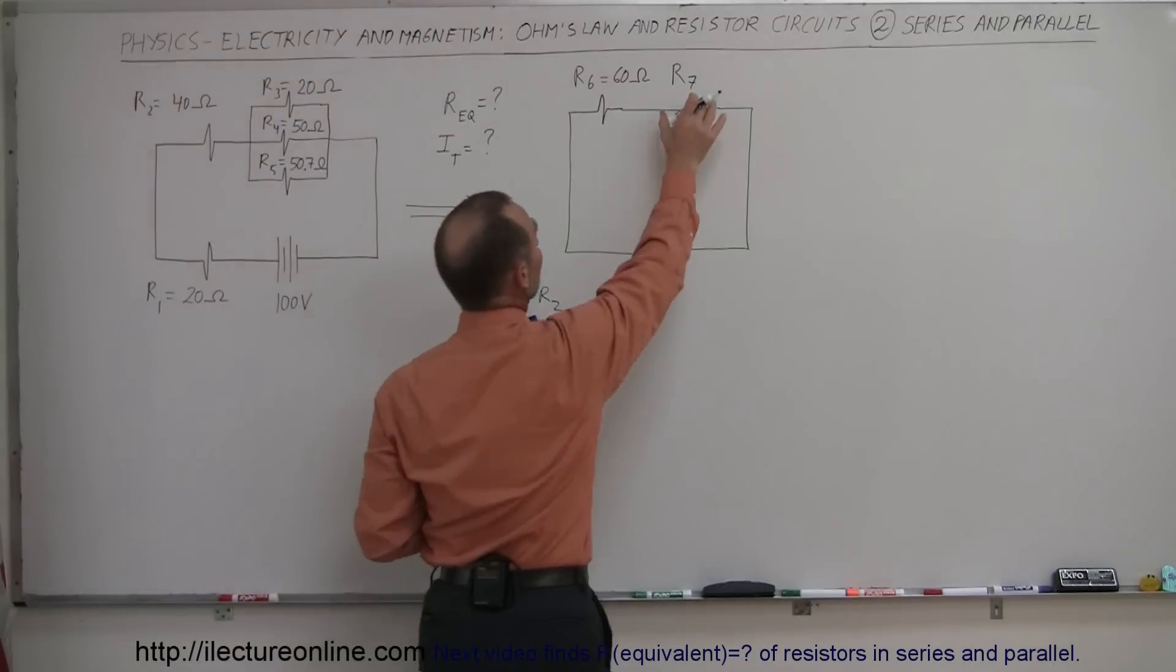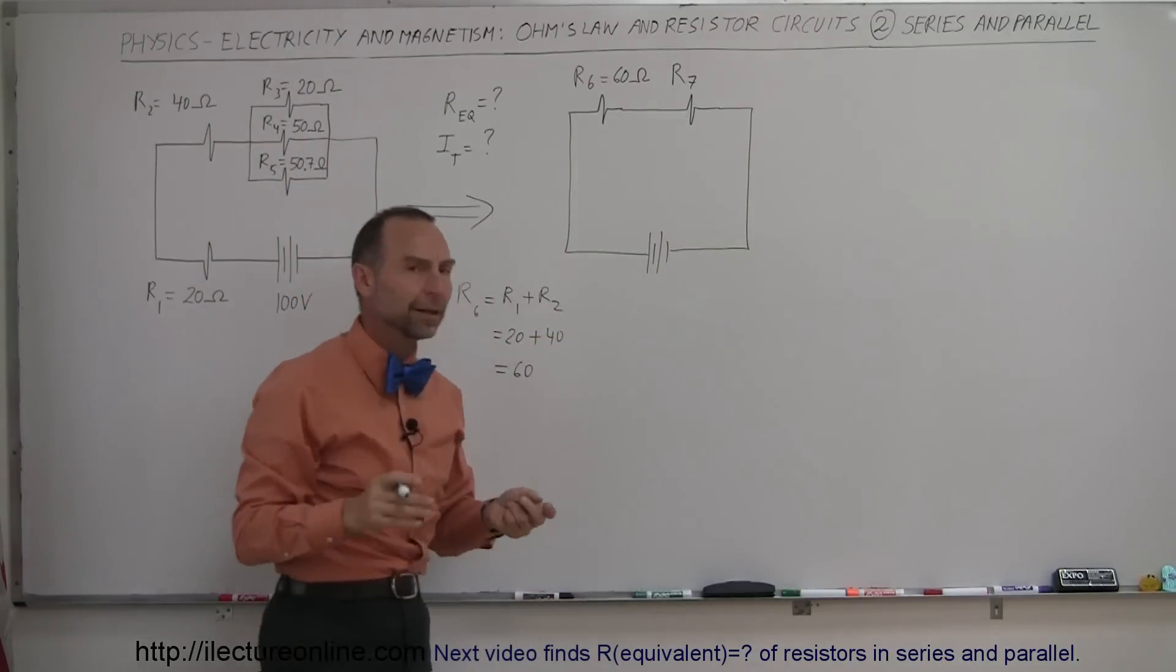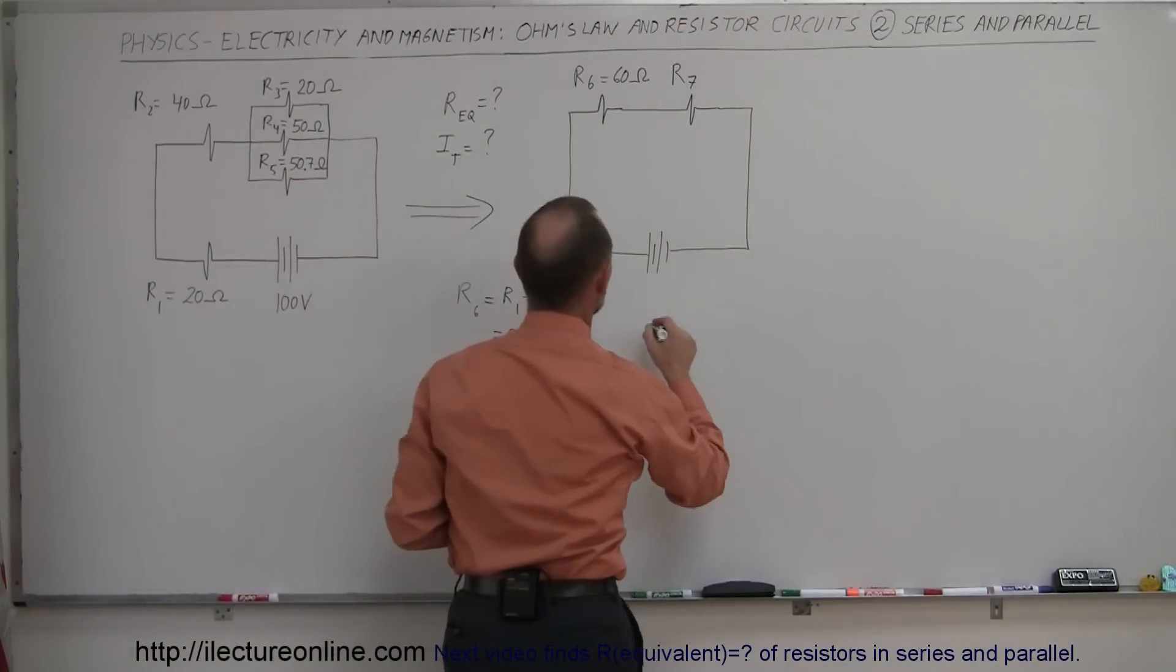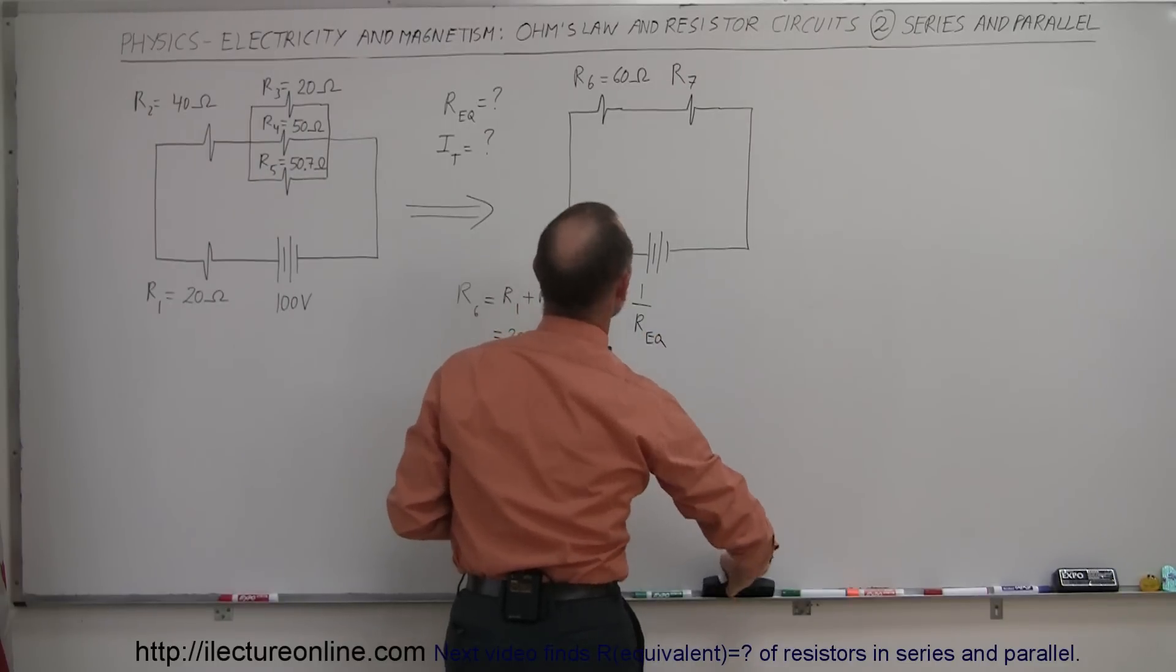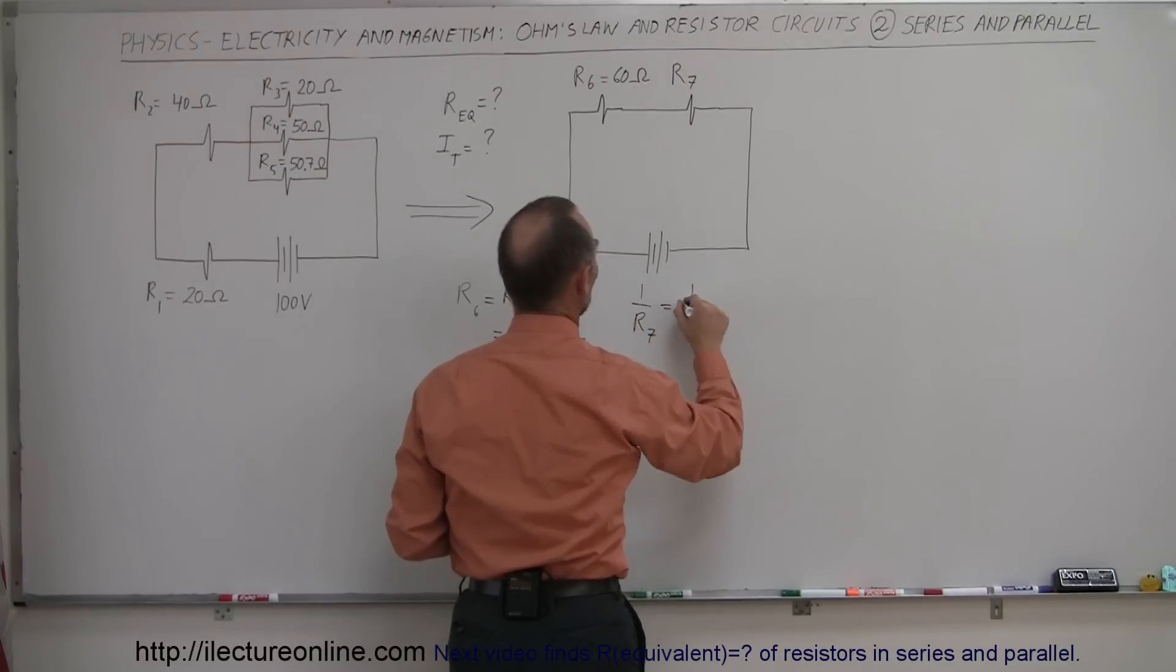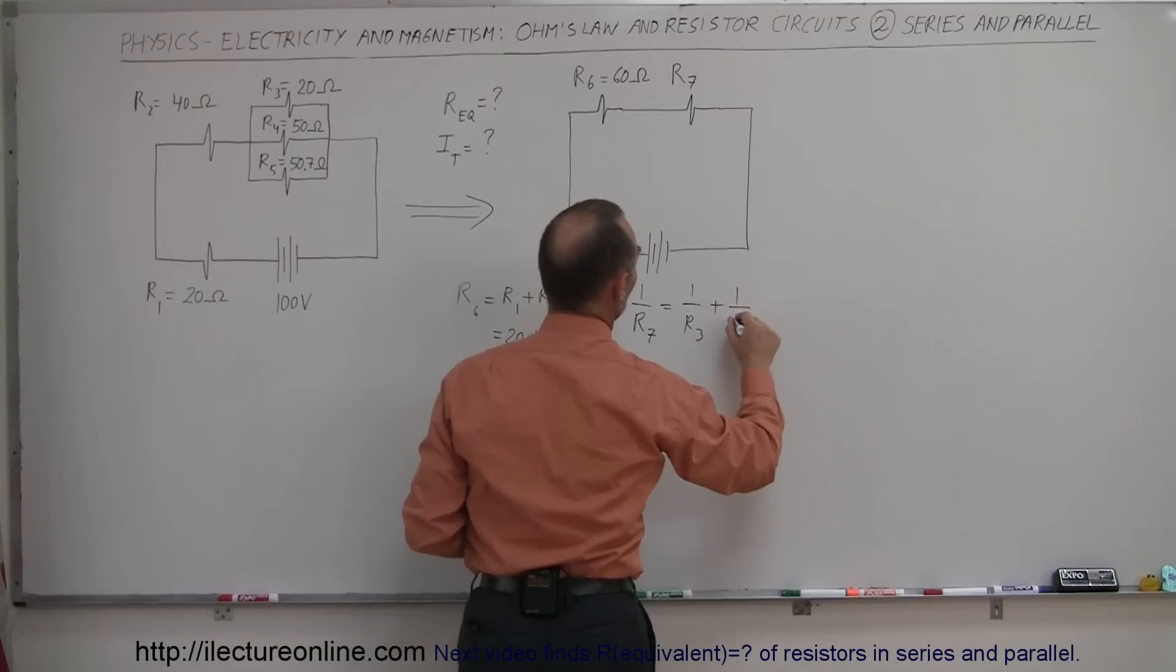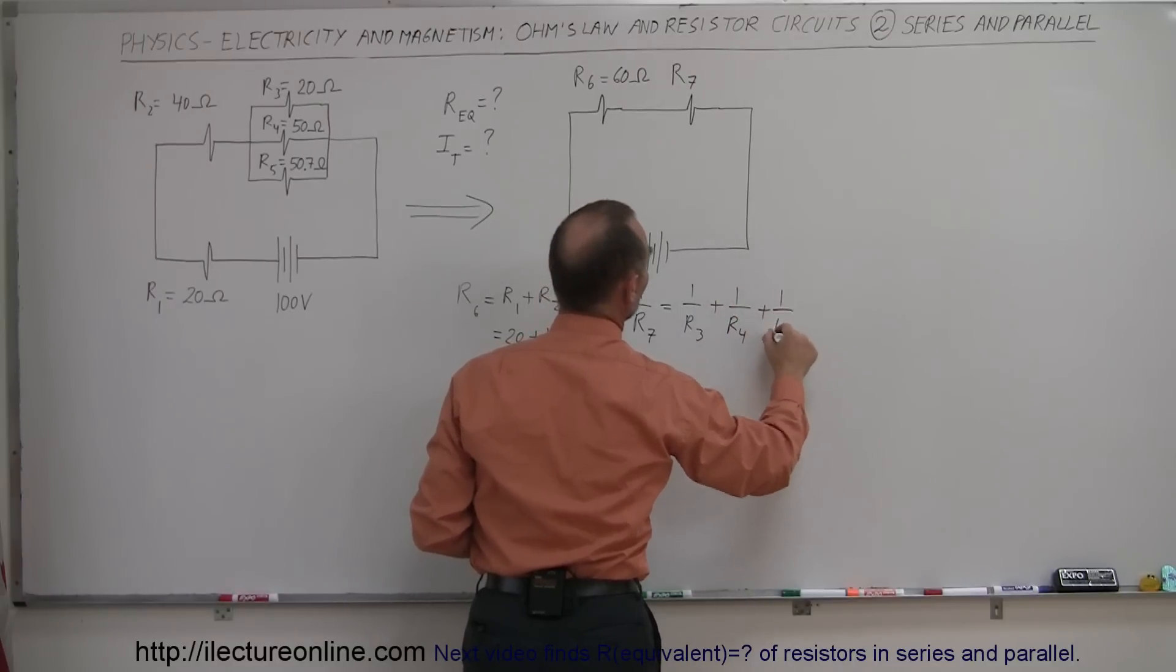Now to find the equivalent resistance of these three combined, since they are in parallel, we use the parallel equation. So 1 over R equivalent—and since I called R equivalent R7, I might as well call it R7—1 over R7, the resultant resistor, is equal to 1 over R3 plus 1 over R4 plus 1 over R5.